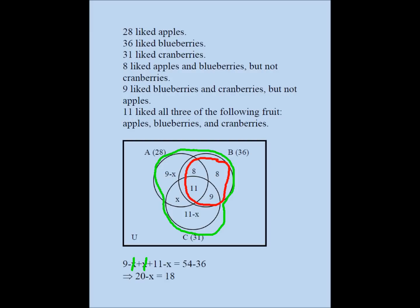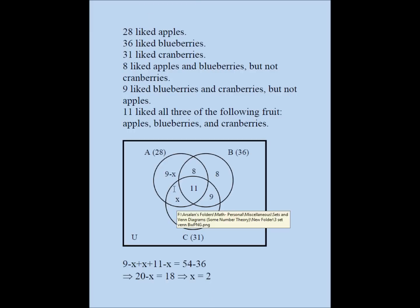With x equal to 2, we can fill in all values. The apples-and-cranberries-not-blueberries region is 2. The cranberries-only region is 11 minus 2, which is 9. The apples-only region is 9 minus 2, which is 7. And of course the region outside all circles is 0.